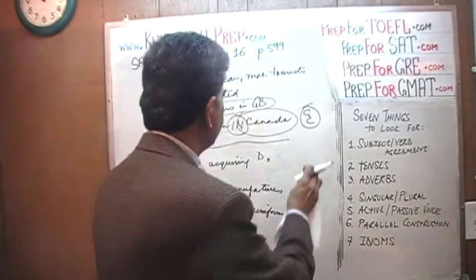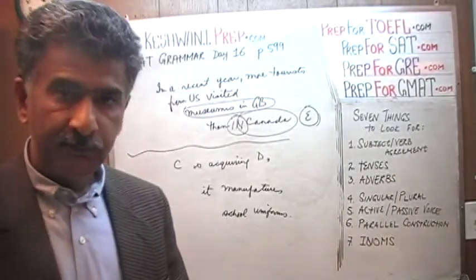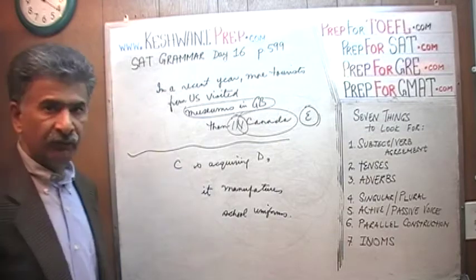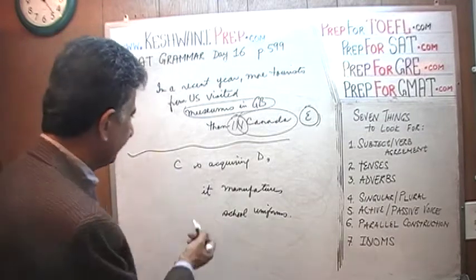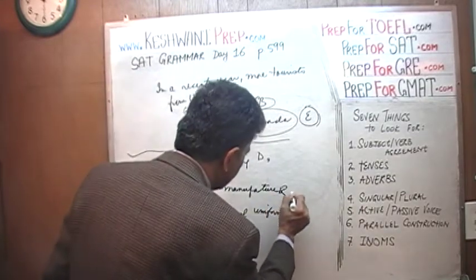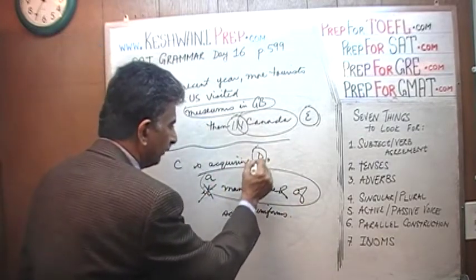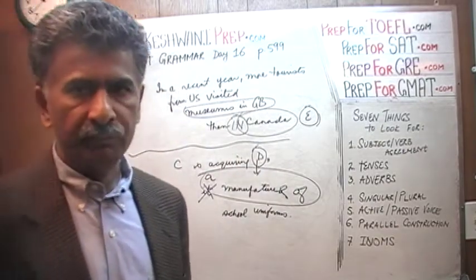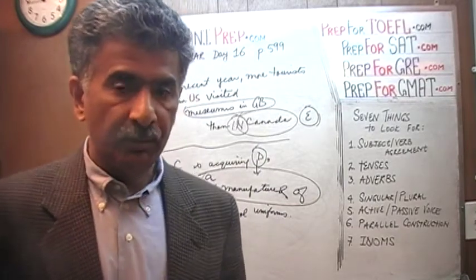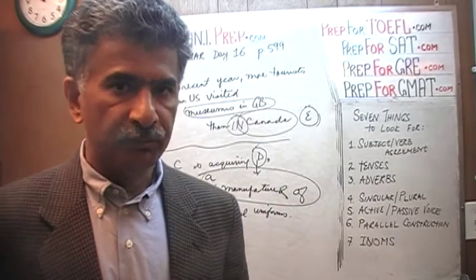Let's go to number 2. It says C is acquiring D. It manufactures school uniforms. Instead of saying 'it manufactures school uniforms,' it should say 'a manufacturer of school uniforms.' So we know that this D they are talking about is a manufacturer of school uniforms. Your answer should be covered at this point — always keep your answer choices covered. You must never look at the answer choices until you know what you are looking for.